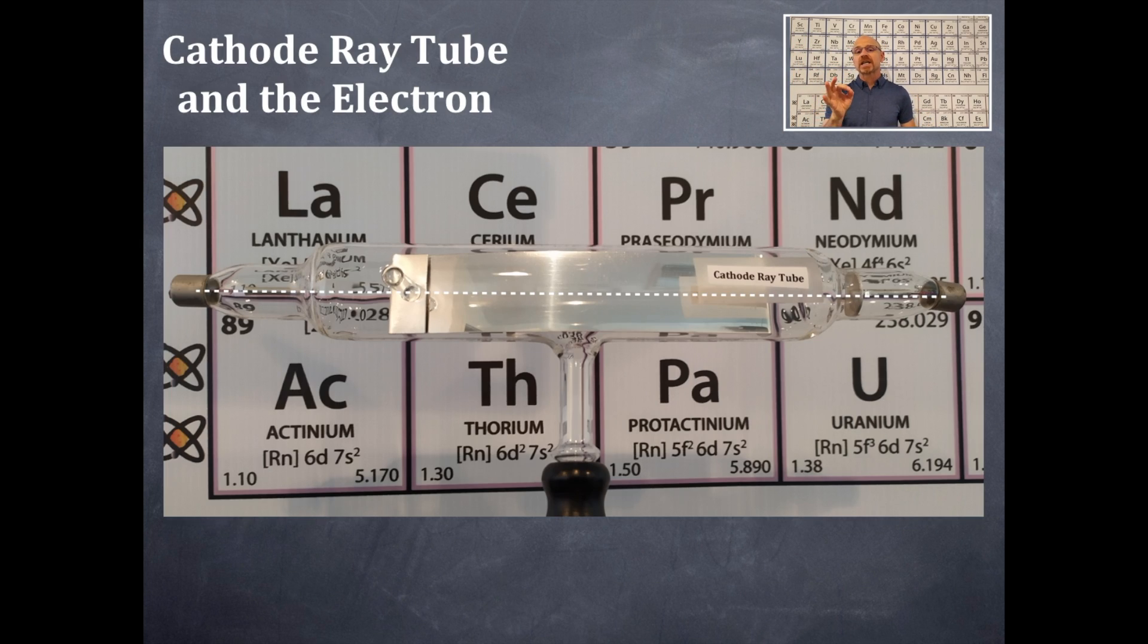So look at this. This is a cathode ray tube that you're looking at right here. In a cathode ray tube, you should see this green line go zipping through there. That is a beam of electrons and that is light that we see. So we're going to take that away there.